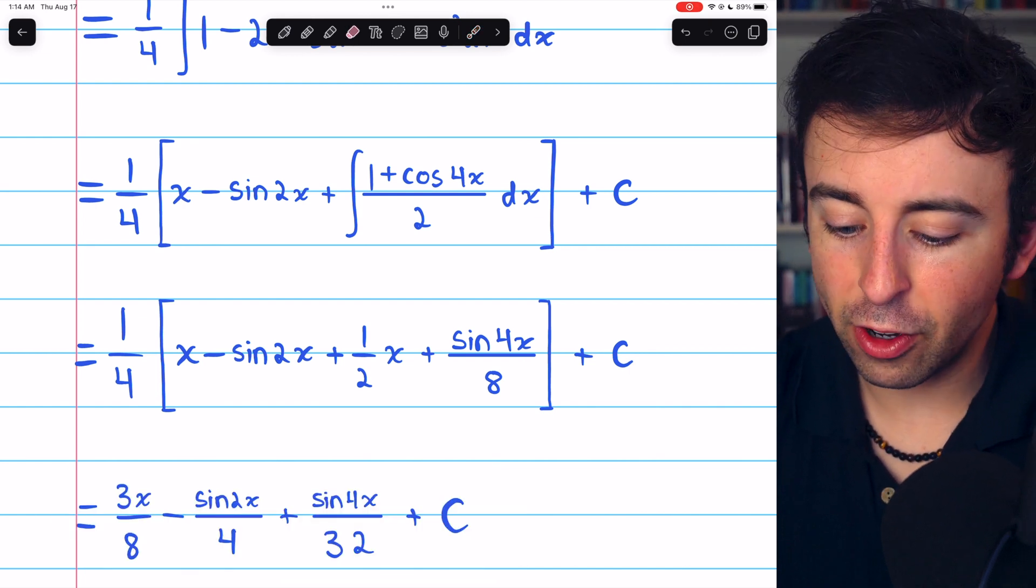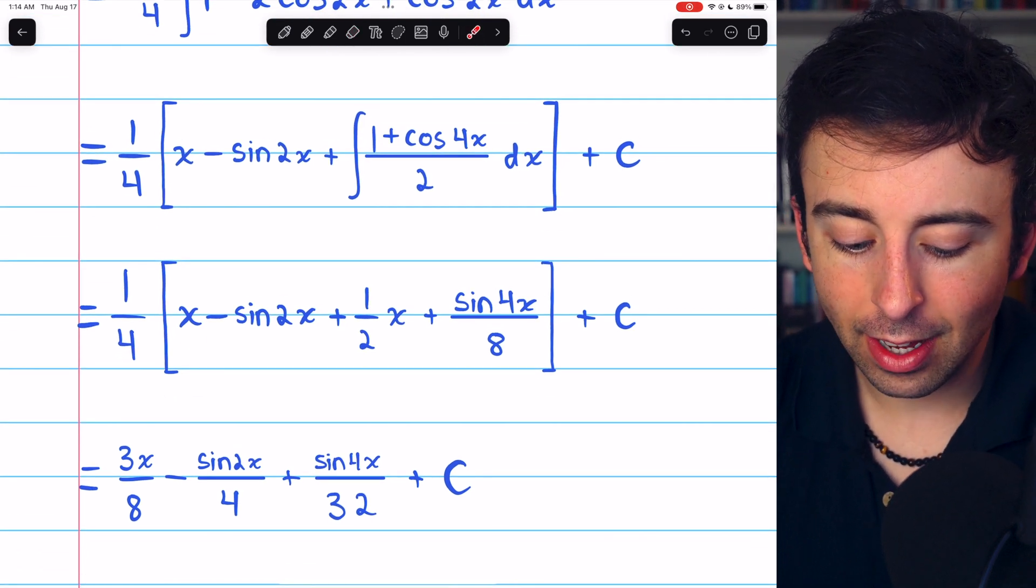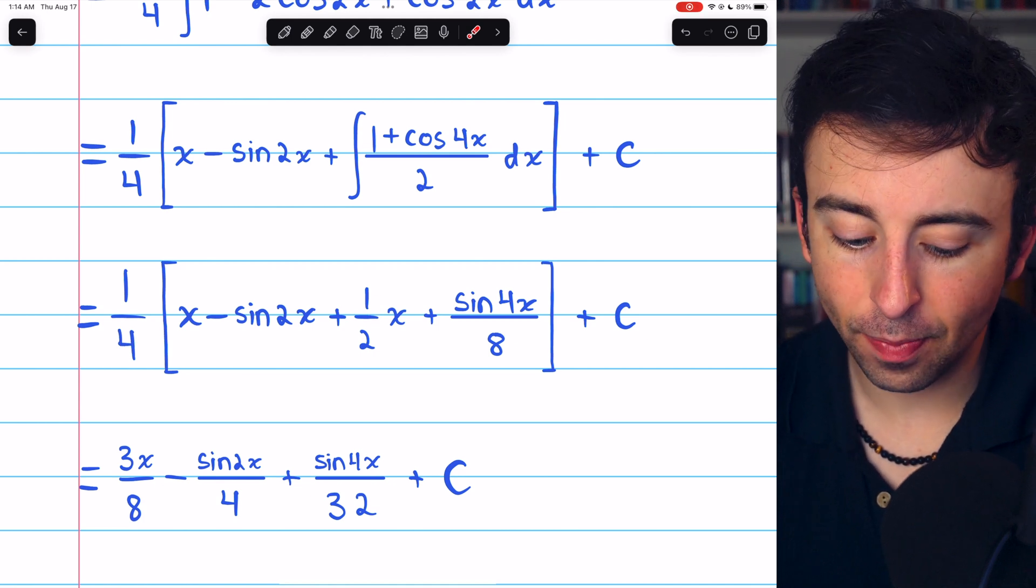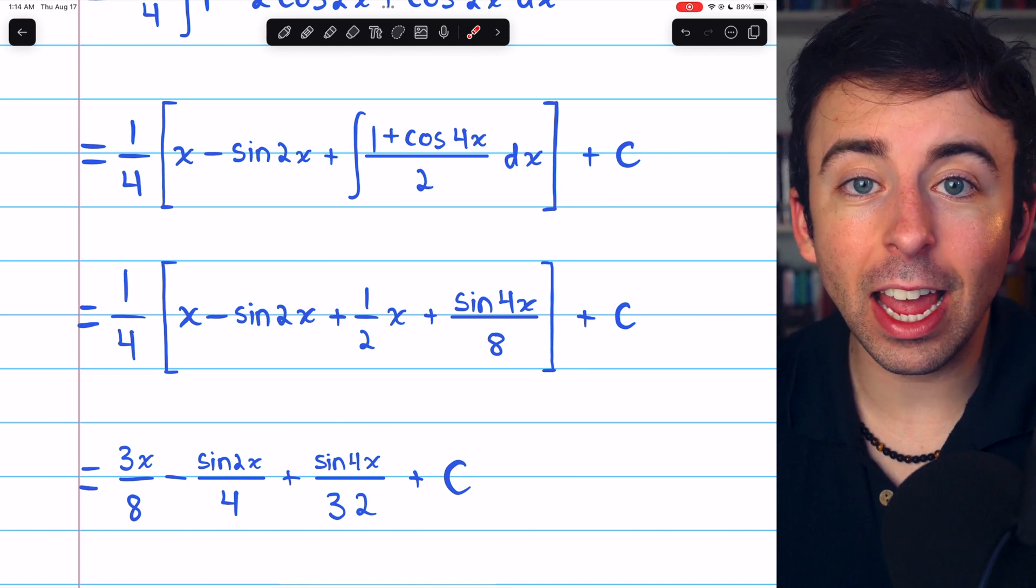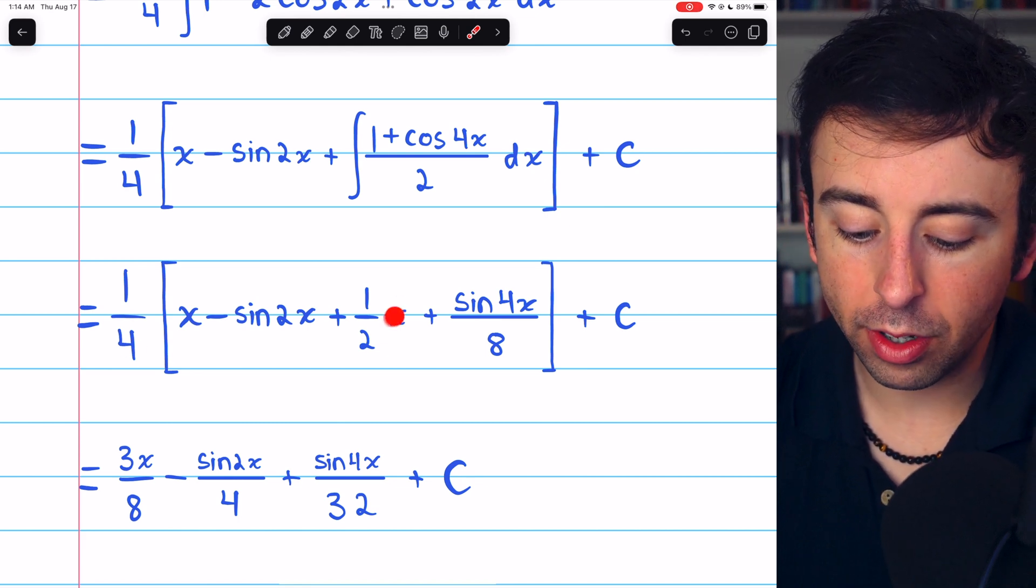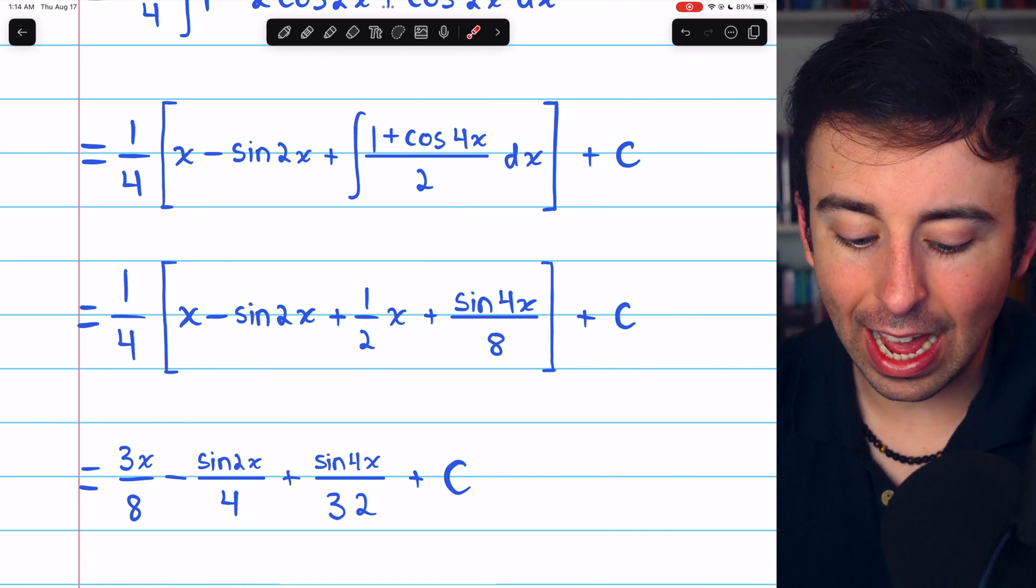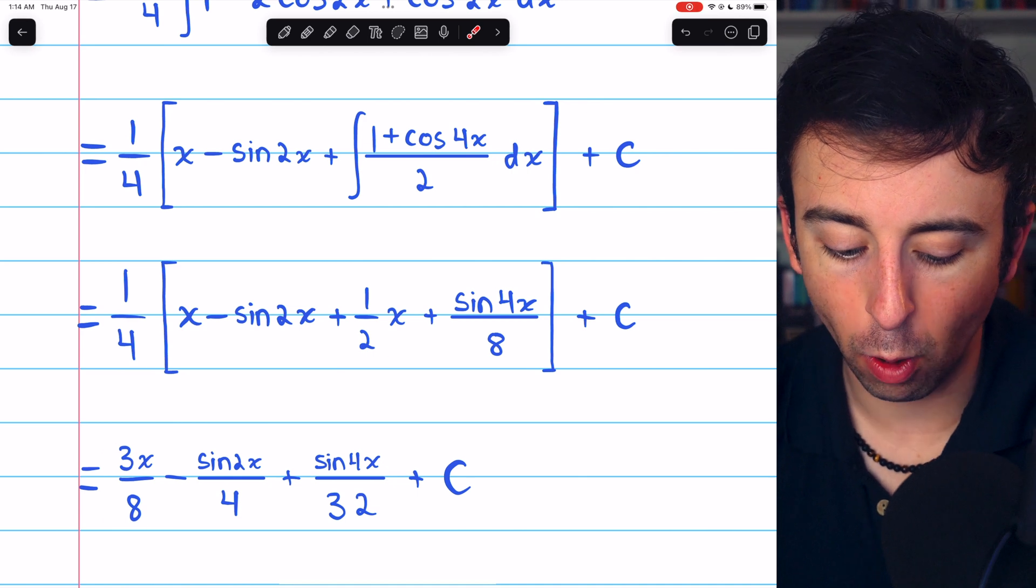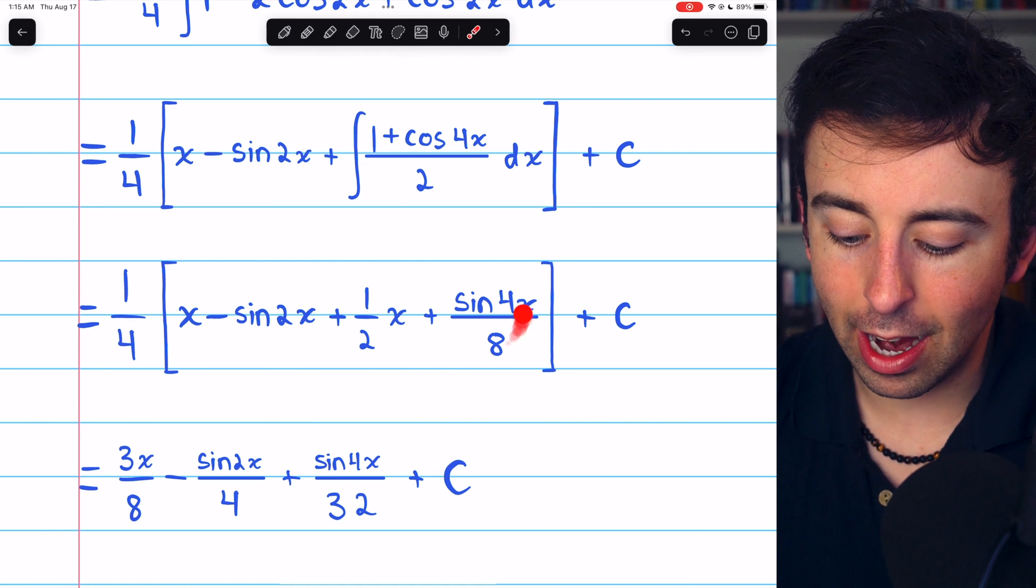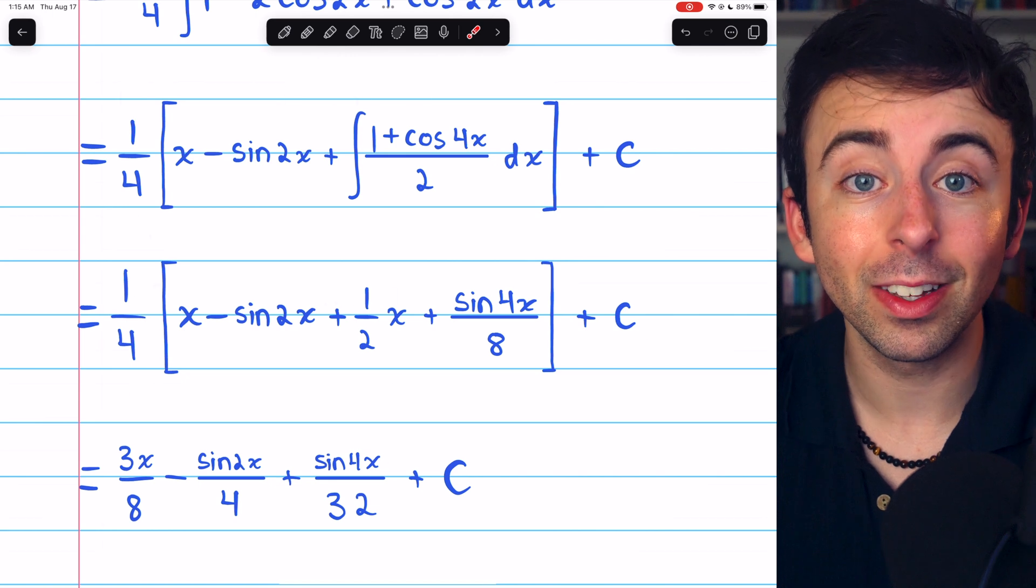Finally, doing a little bit of simplification and distribution, 1 fourth gets multiplied by x, and 1 fourth gets multiplied by 1 half x. Now, 1 fourth x is the same as 2 eighths x, and 1 fourth times 1 half x is 1 eighth x. So, they add together to give us 3x over 8. Then, we have minus sine of 2x over 4 and plus sine 4x over 32 plus the arbitrary constant of c.